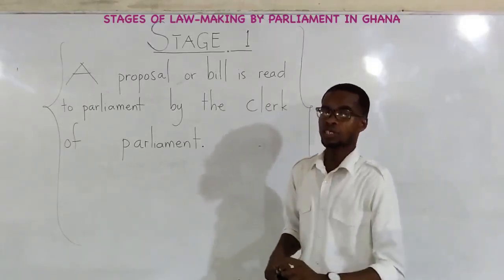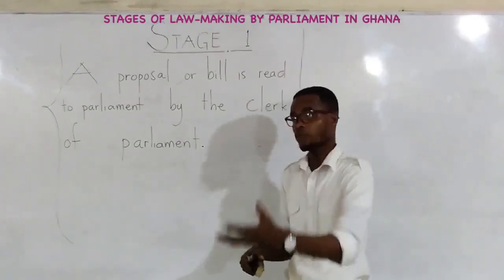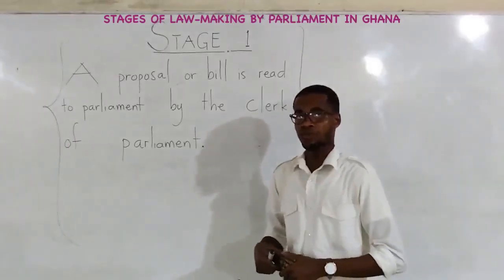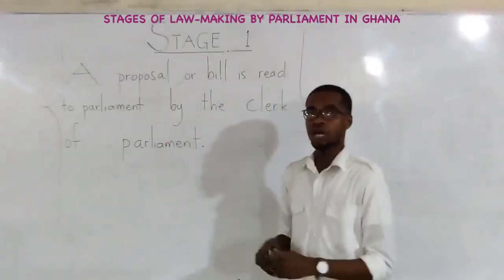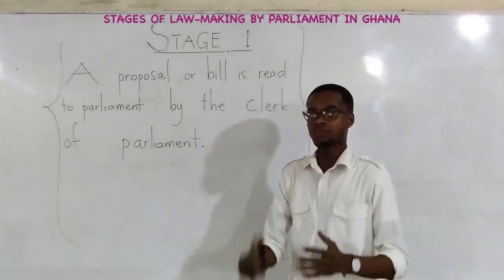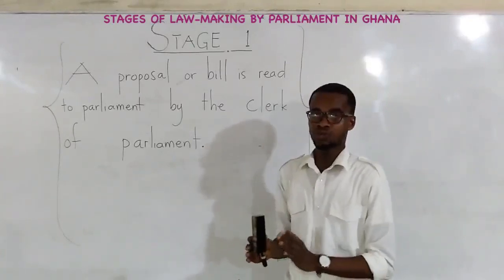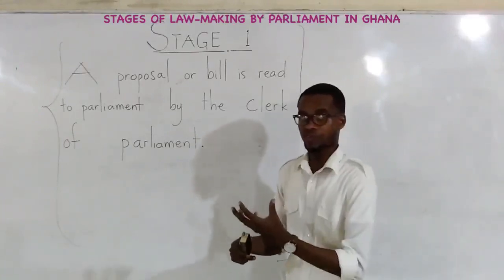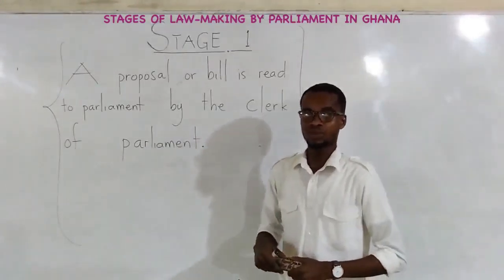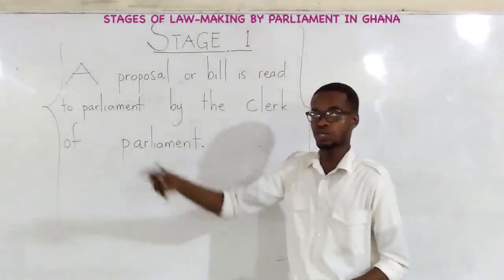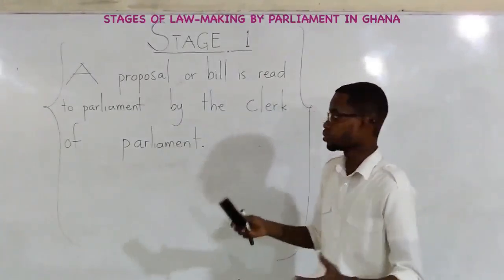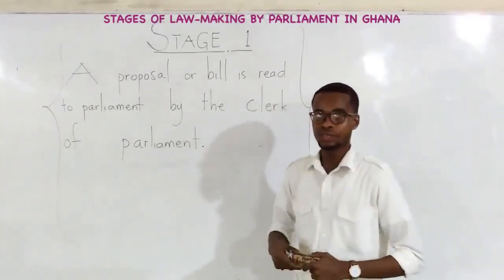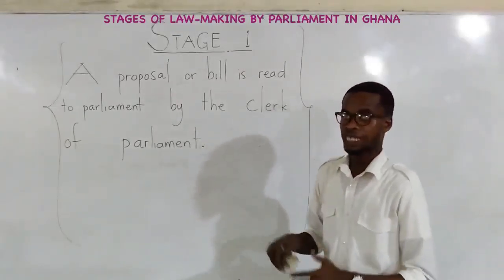We still call it a bill or a proposal at this stage. Normally these proposals will come in the form of government policies from the executive, because the executive is one of the arms of government and that's where the President is. For example, the Right to Information Bill that was passed recently had to come from the public — the media houses were pushing for it. Then it got to the executive who decided to put it in place, but they forwarded it to parliament. So it came to parliament as a bill, and it has to be read to the house the first time. This is the first reading, and the clerk is the one who does the reading. All parliamentarians will have copies of the bill.